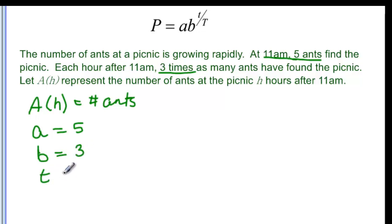Then we've got little t, and that's going to be our unknown. That's actually, in our case, going to be the h. And then the big T in our formula is how often is this happening? And it tells us right here that each hour. So that's every one hour.